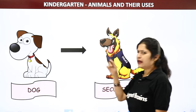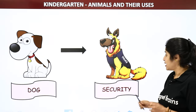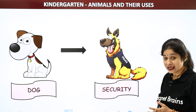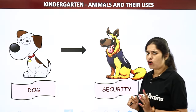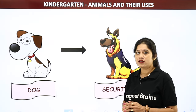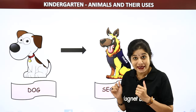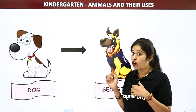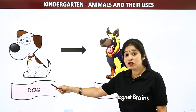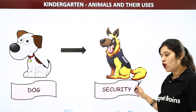It's a dog! How do we use dogs? We use dogs as security guards at our home. Have you ever seen a dog bark when you went to someone's place and a dog came from inside and started barking at you? That's because that dog doesn't know you. So dog is used as a security guard at our homes.